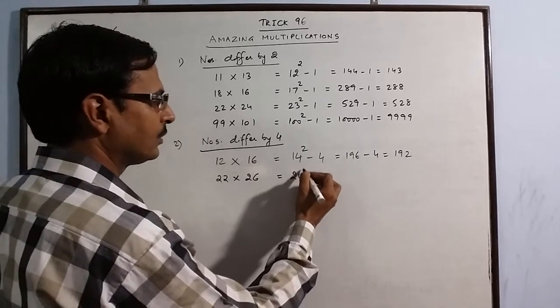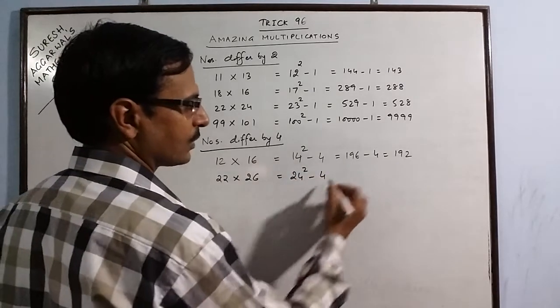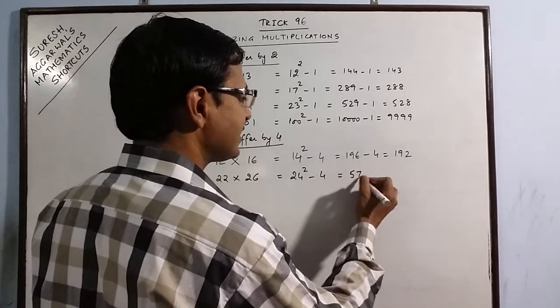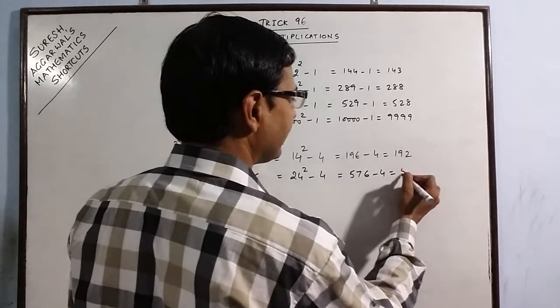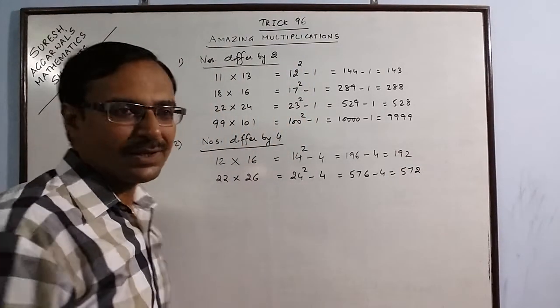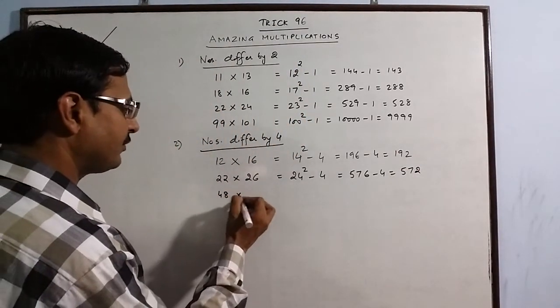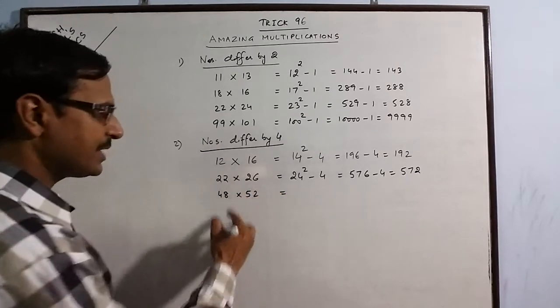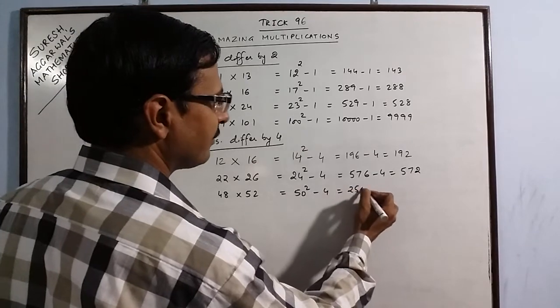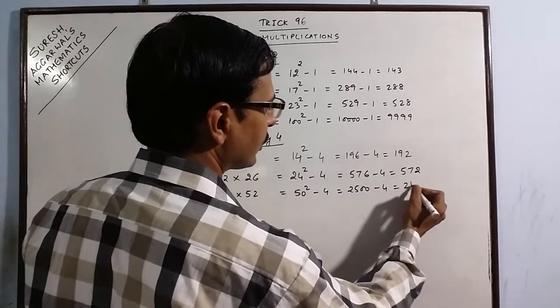So 24 square - you need to know the square of 24, it is 576 - minus 4: 572 is the product. Likewise, if you take 48 and 52, intermediate number is 50. So 50 square minus 4: 2,500 minus 4, 2,496.